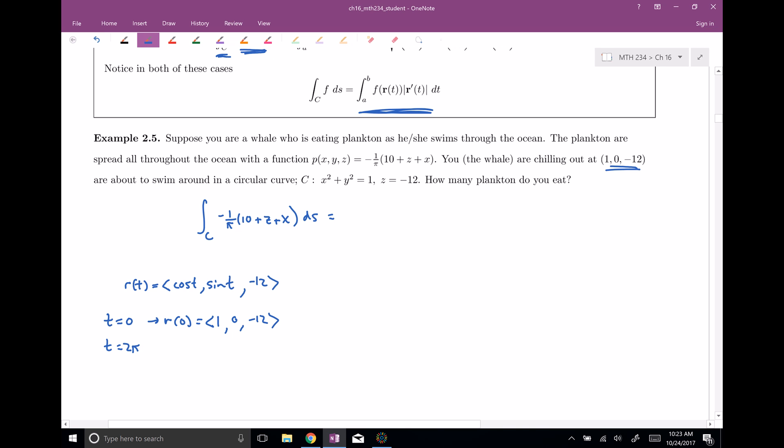All right, so let's go ahead and start plugging in our parametrization. So we're gonna do, integrate from zero to two pi. That's our bounds here. Okay, now f of r of t. So here is my f function, but I'm gonna plug in, instead of x's, I'm gonna plug in my parametrization. So instead of x's, I'm gonna plug in cosine. And instead of y's, I'm gonna plug in sine. Instead of z's, I'm gonna plug in negative 12. And so I'm gonna have negative one over pi, times 10, plus z, so z is negative 12, plus x, and x is cosine. So this is what the f of r of t is.